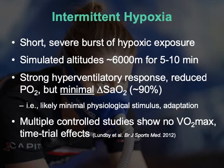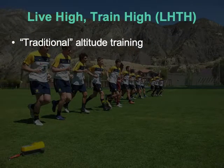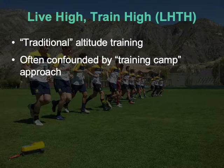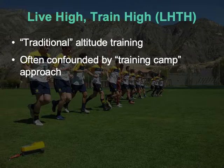Live low, train high is not very effective for sea level performance. What might be effective is the classic training camp approach of live high, train high — traditional altitude training, usually done by groups of athletes preparing to compete in a high-altitude environment. An important caveat: any effects observed might be due to living and training at altitude, but they might also be due to the intensive training camp approach itself — camaraderie, early mornings, regimented eating, the bubble effect.